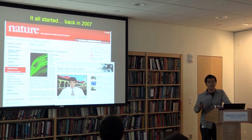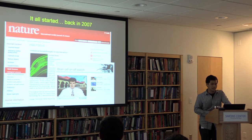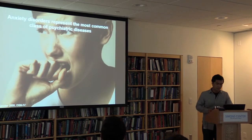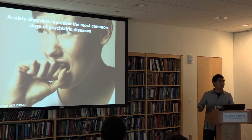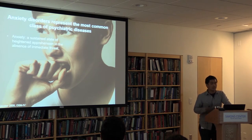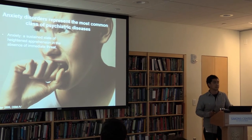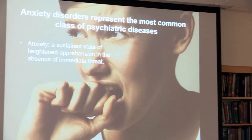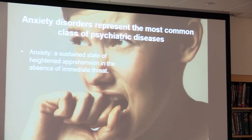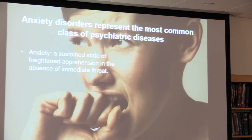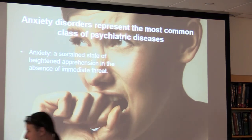This eventually led me to the Deisseroth lab as a graduate student. The lab studied anxiety circuitry. Anxiety can be thought of as a sustained state of heightened apprehension in the absence of a specific, predictable, and immediate threat. Anxiety is an adaptive state that is critical for an organism to survive under unpredictable risks, but it can become maladaptive and severely debilitating.